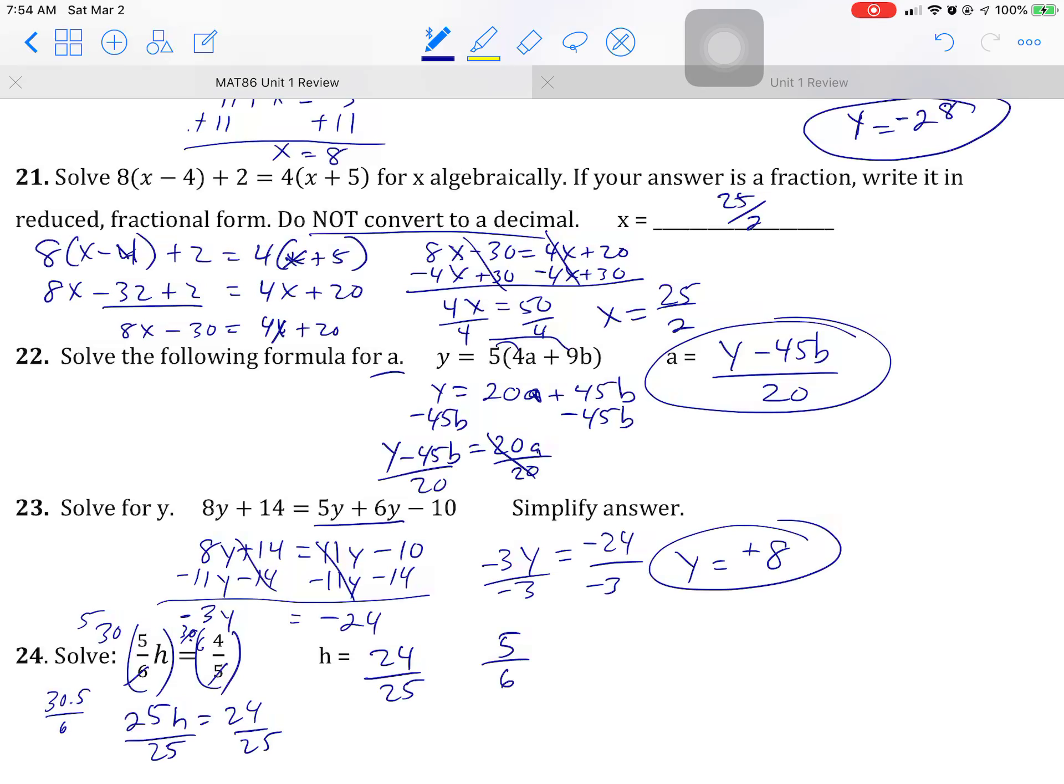Let's check that one. 5 over 6. If I'm saying H is 24 over 25 and all that's going to equal 4 over 5. Let's make sure. You can multiply 24 by 5 and 25 by 6 or you can reduce stuff all over the place. And that tells you right there. 4 over 5. We're good.